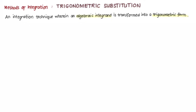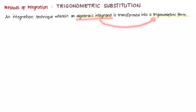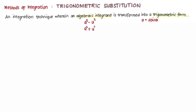There must be a pattern that we see on the algebraic integrand so that we can transform it into trigonometric form — meaning it's not just any algebraic integrand. Either it's a squared minus u squared, and if you see a squared minus u squared, we let u be equal to a sine of theta. If we see a squared plus u squared, we let u be equal to a tangent of theta.